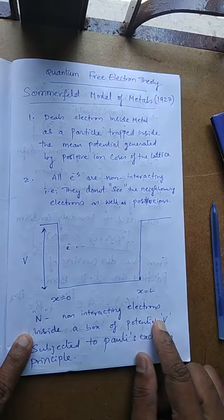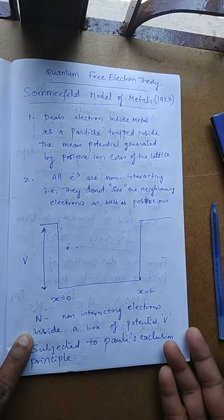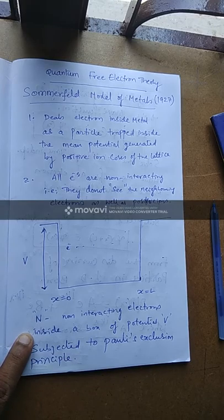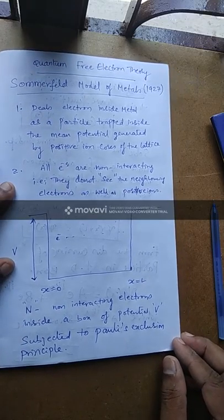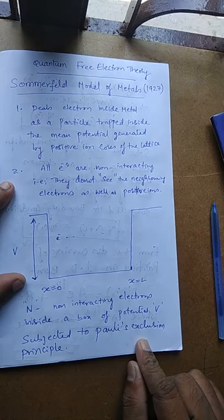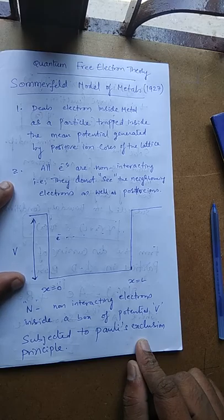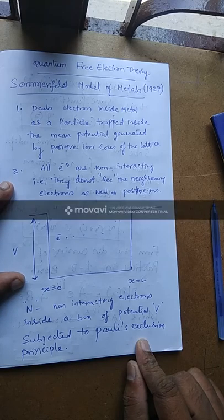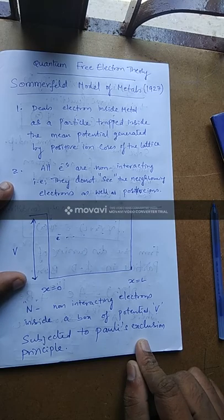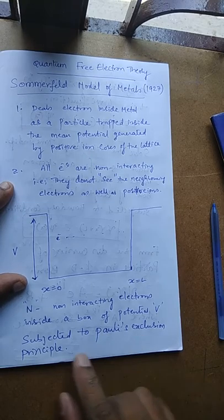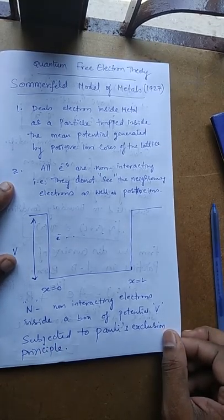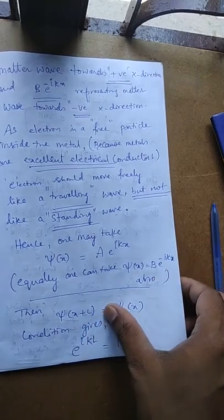Since the electrons are non-interacting, it is sufficient to solve the Schrödinger equation for just one electron — the solution is equally applicable to all the rest. We solve this subject to Pauli's exclusion principle, which states that no two electrons in a given system can have the same set of quantum numbers. Even if principal and azimuthal quantum numbers match, the spin quantum number will differ.